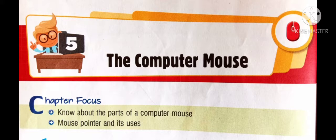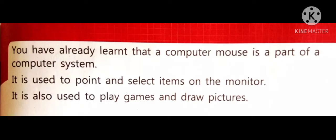But before that, here is a short glimpse of the chapter. In this chapter, we have learned that a computer mouse is a part of a computer system. It is used to point and select items on the monitor. It is also used to play games and draw pictures.